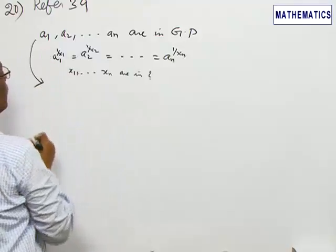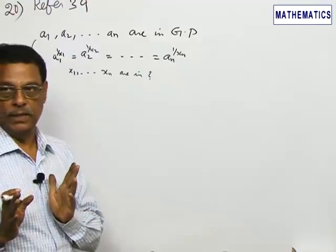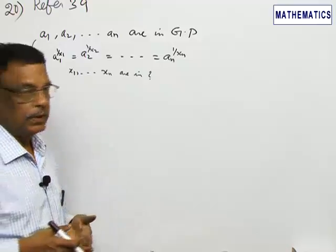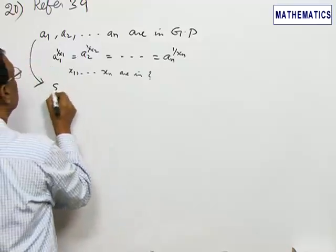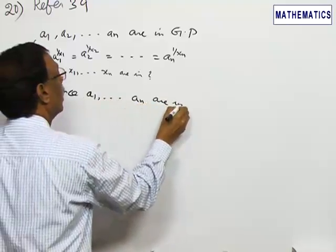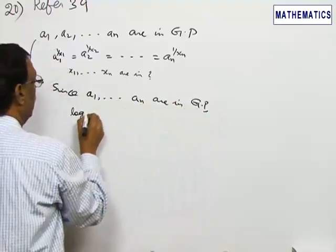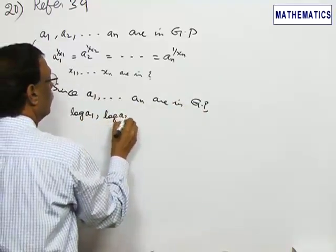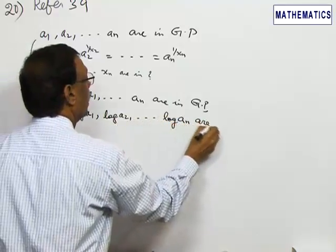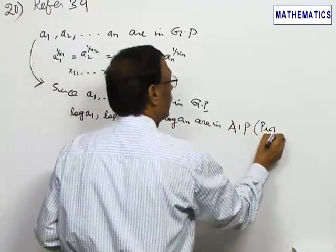From what is given, we use the result: if a sequence of numbers is in GP, then the logarithm of the sequence will be in arithmetic progression. That is a property. Since a₁, a₂, ..., aₙ are in GP, log a₁, log a₂, ..., log aₙ are in arithmetic progression. This is a property.